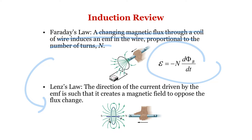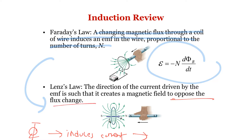Lenz's law states that a changing magnetic flux will induce a current, and this induced current will produce its own magnetic field that opposes the change in the original magnetic flux. When the flux is increasing, the induced current direction is opposite; when decreasing, it is in the same direction. The induced magnetic flux will be in the direction that opposes the original change in magnetic flux.